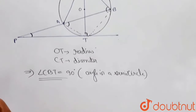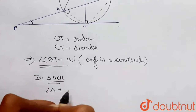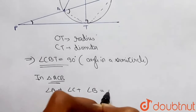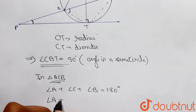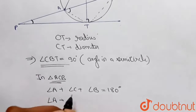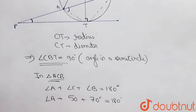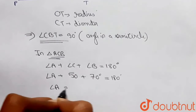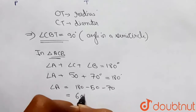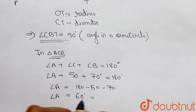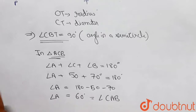Moving further, in triangle ACB, the sum of angles A, C, and B equals 180 degrees. Angle ACB is given as 50 degrees and angle ABC is given as 70 degrees. So angle A equals 180 minus 50 minus 70, which gives us 60 degrees. Therefore, angle CAB is equal to 60 degrees.